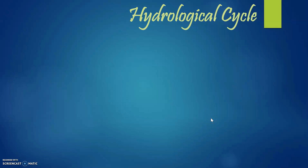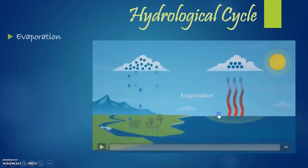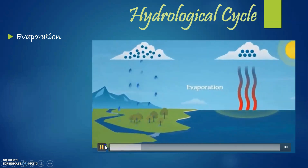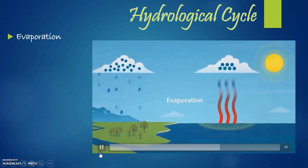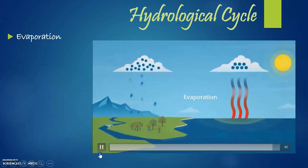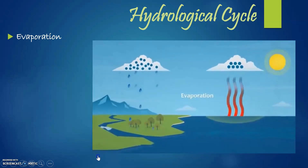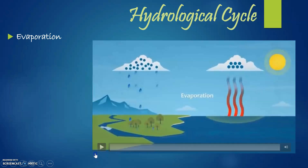Here we have the very first slide on the screen: the hydrological cycle, also called the water cycle. The first feature is evaporation — it is basically the process of turning liquid into vapors. Whenever a water body gets heated by solar radiation, the liquid turns into vapors. That is evaporation.